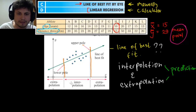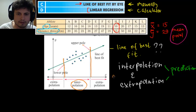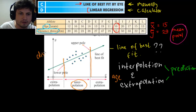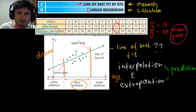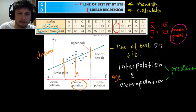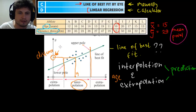For example, using the age-versus-distance graph: suppose we want to find how far a 14-year-old child would throw a discus, but we don't have that value in our data. We use interpolation — find 14 on the x-axis, go up until we cross the regression line, then go left until we cross the y-axis. That value gives us the estimated distance for a 14-year-old. This is a prediction, or guesstimation, of the distance the discus would travel.